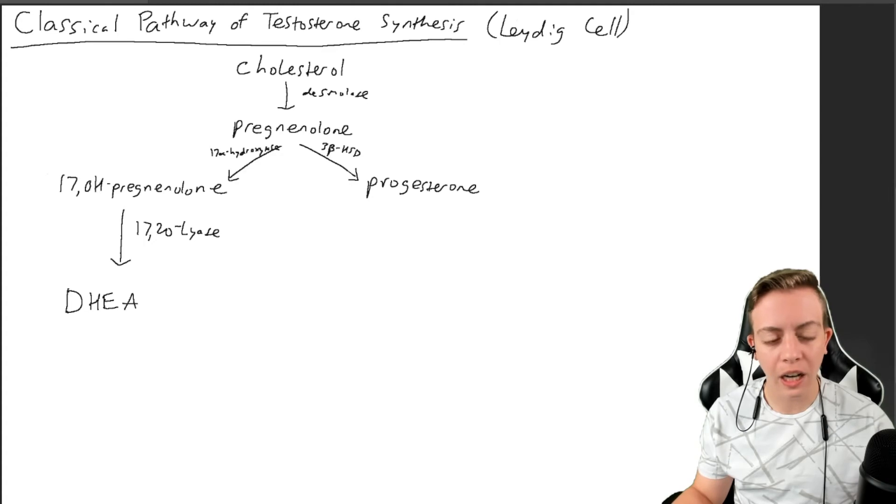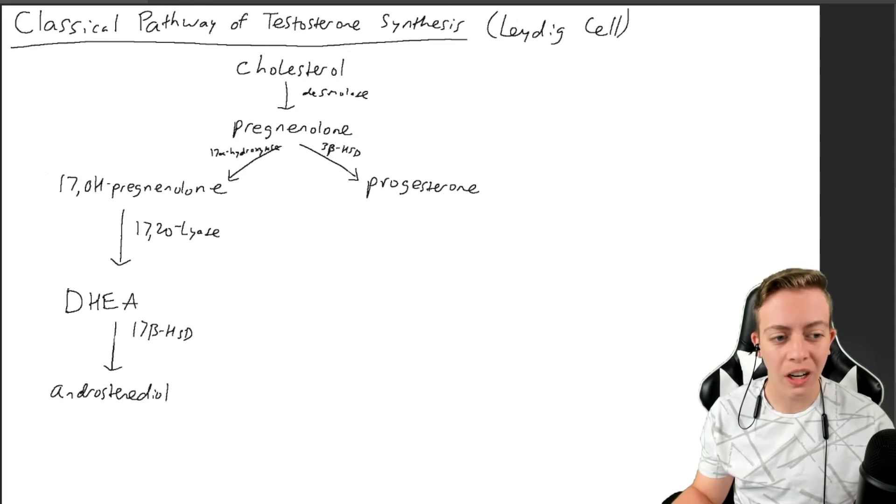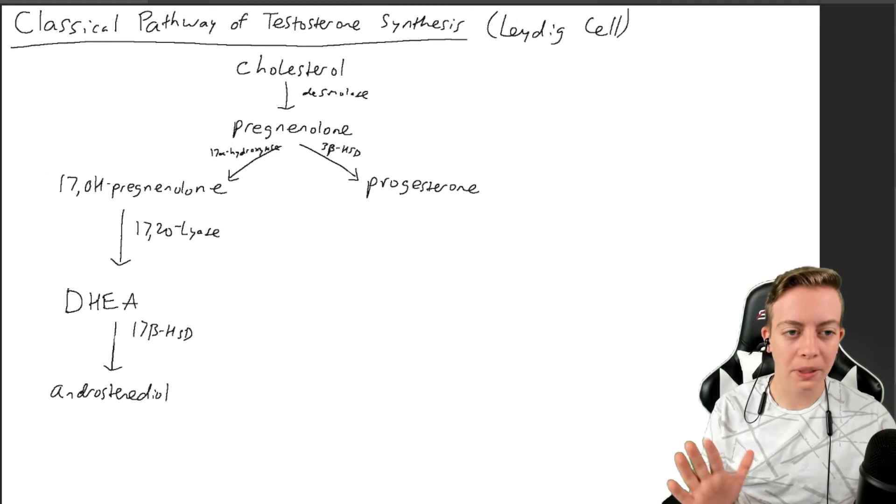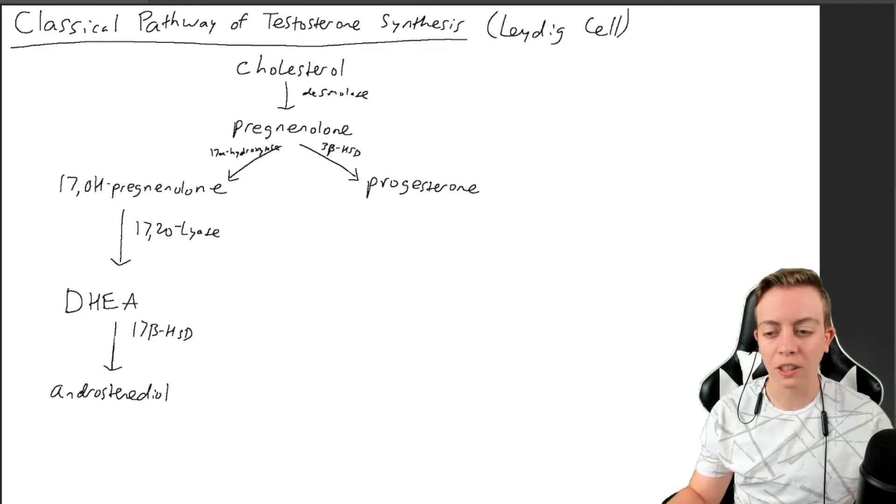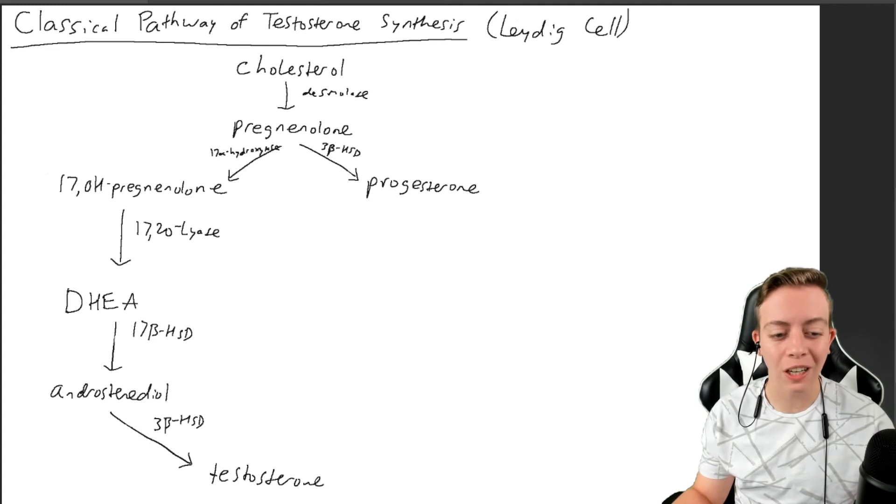And then DHEA, this time will be converted to androstenediol - not androstenedione, androstenediol. Although DHEA can be converted to androstenedione, that's not super important for this pathway. It is converted by 17-beta-HSD to androstenediol. Androstenediol will be converted by 3-beta-HSD to testosterone on that side of the pathway.